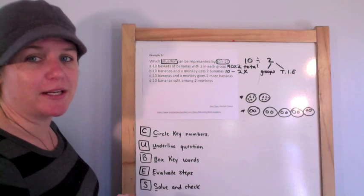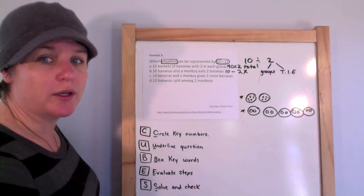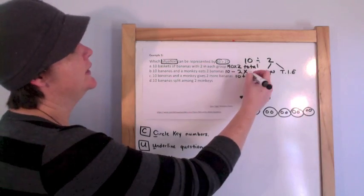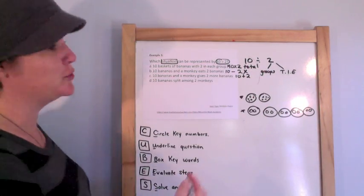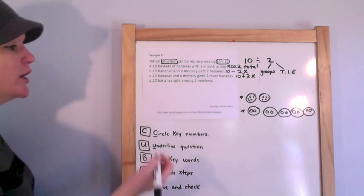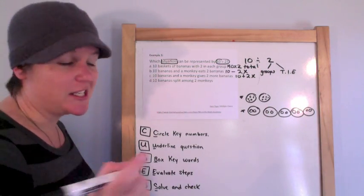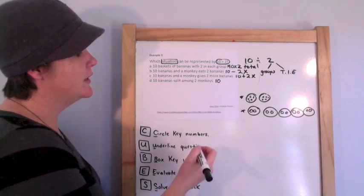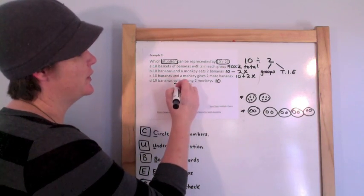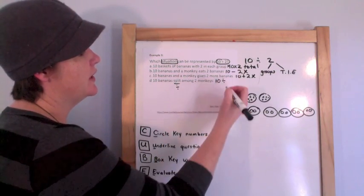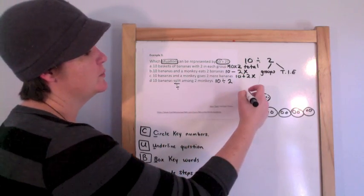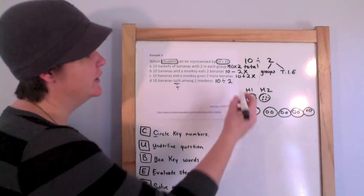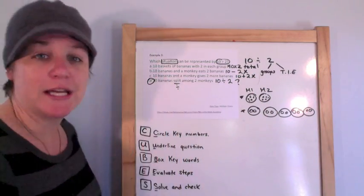10 bananas and a monkey gives two more bananas. So we've got 10 bananas and then a monkey comes by like monkeys always do and gives you two more bananas. That would be 10 plus two. We're looking again for 10 divided by two. So sometimes kids will just go to this one right away, but let's make sure. 10 bananas split. Ooh, that's a good keyword for division. Split among two monkeys. So this would be monkey one and monkey two, each would get five. So that would be our answer. D.